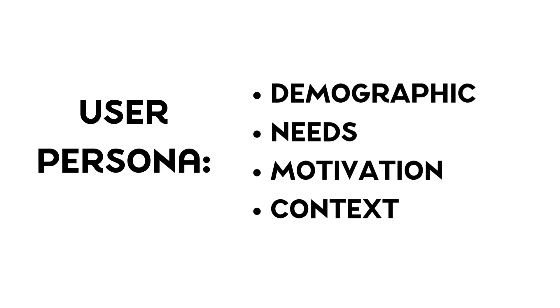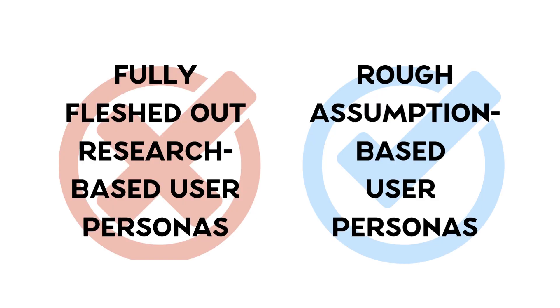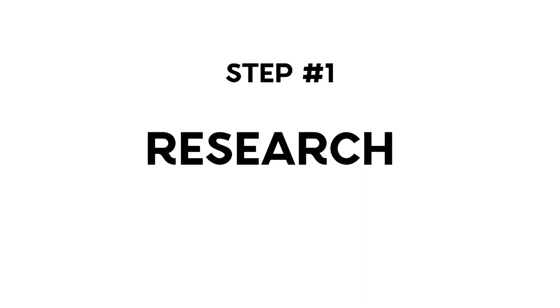When I am brainstorming for my books, I don't actually create fully fleshed-out research-based user personas. Instead, I use the notion of a user persona and sketch out very rough assumption-based personas that I can work around as I build my book. Now that you understand what my focus is, let's dive right into the actual brainstorming process.